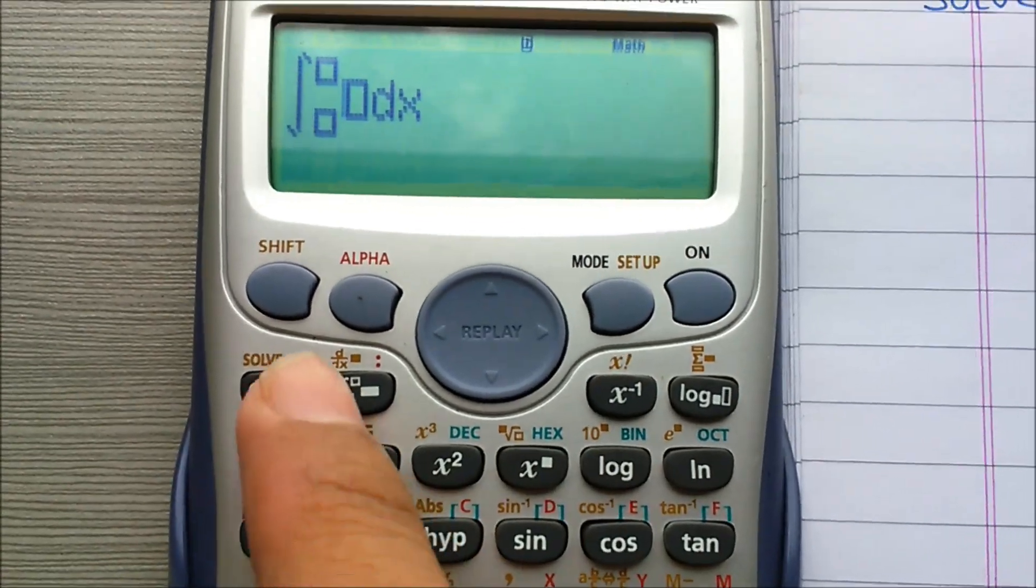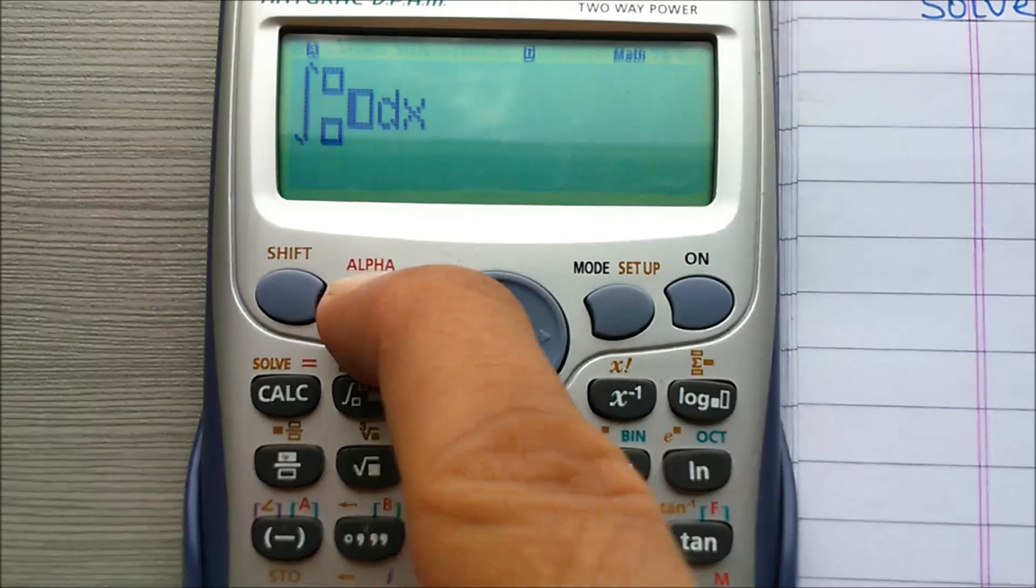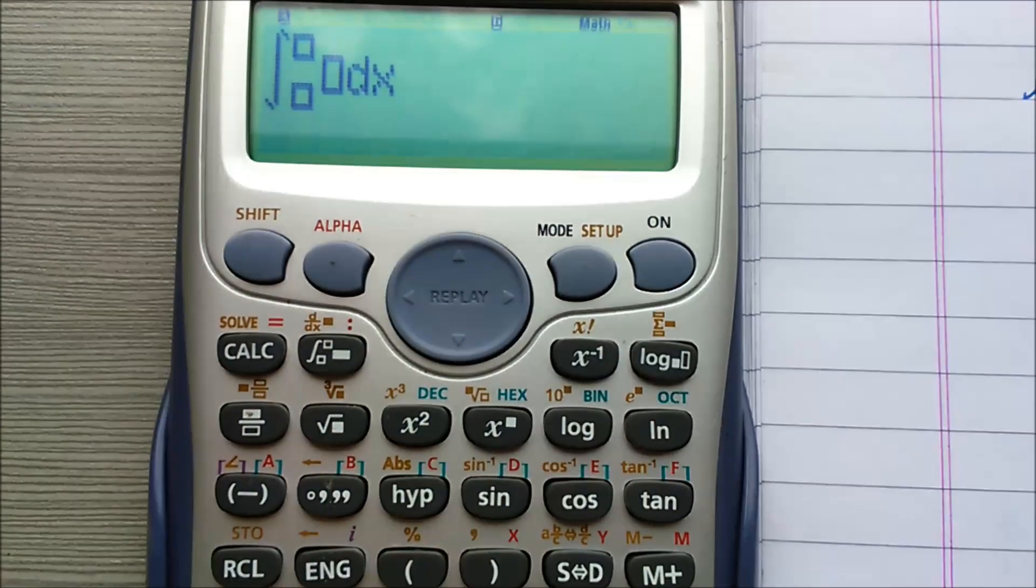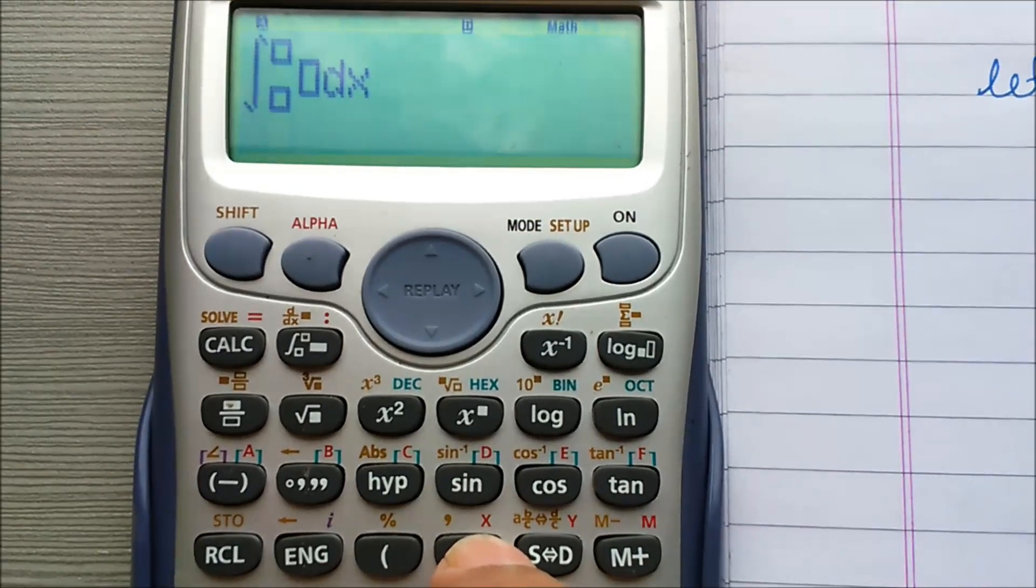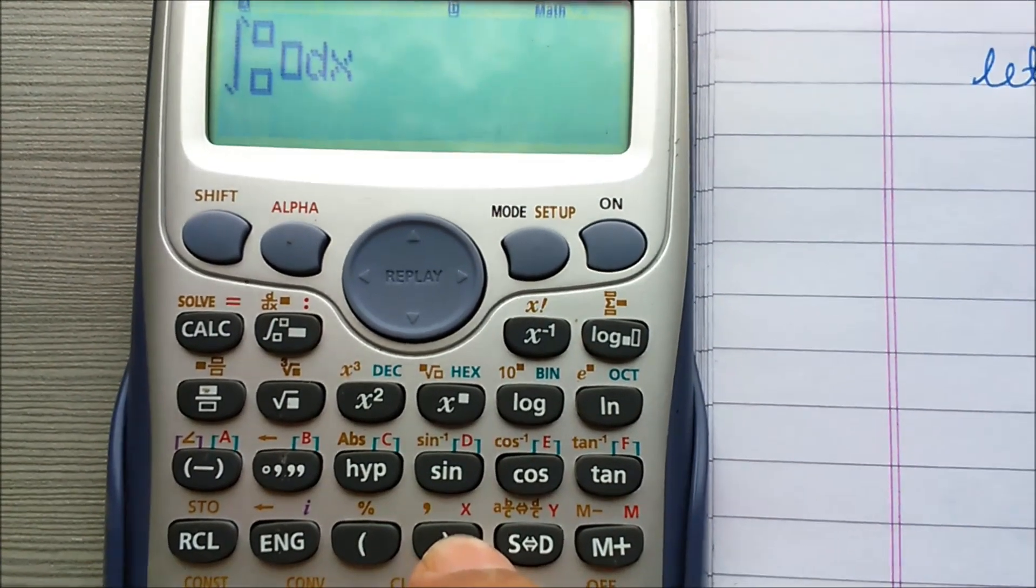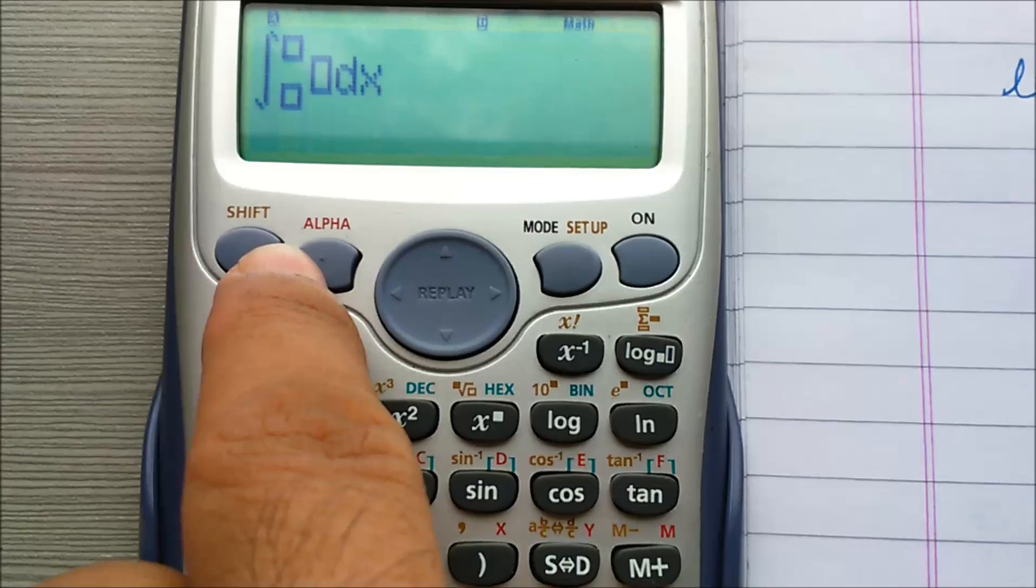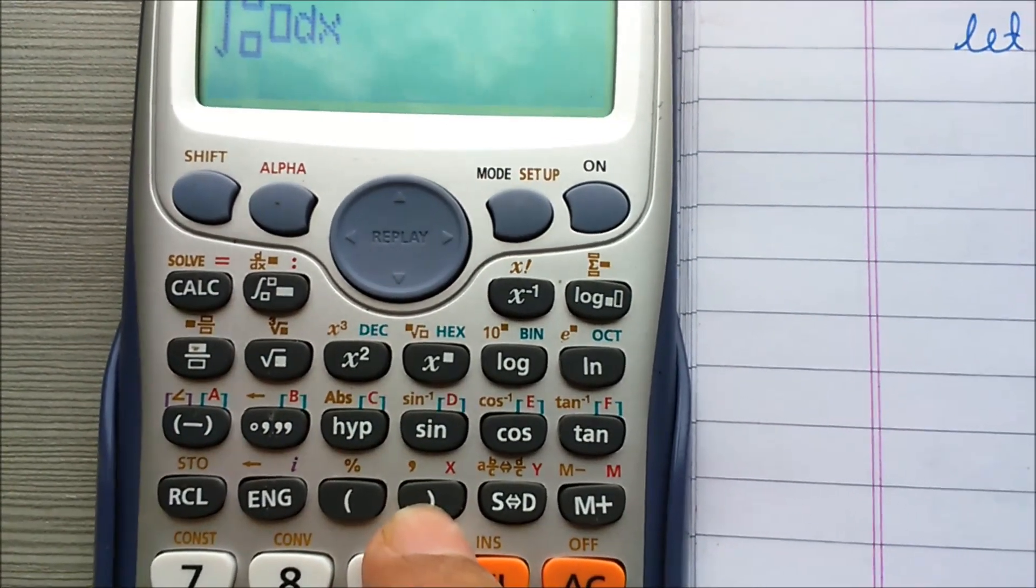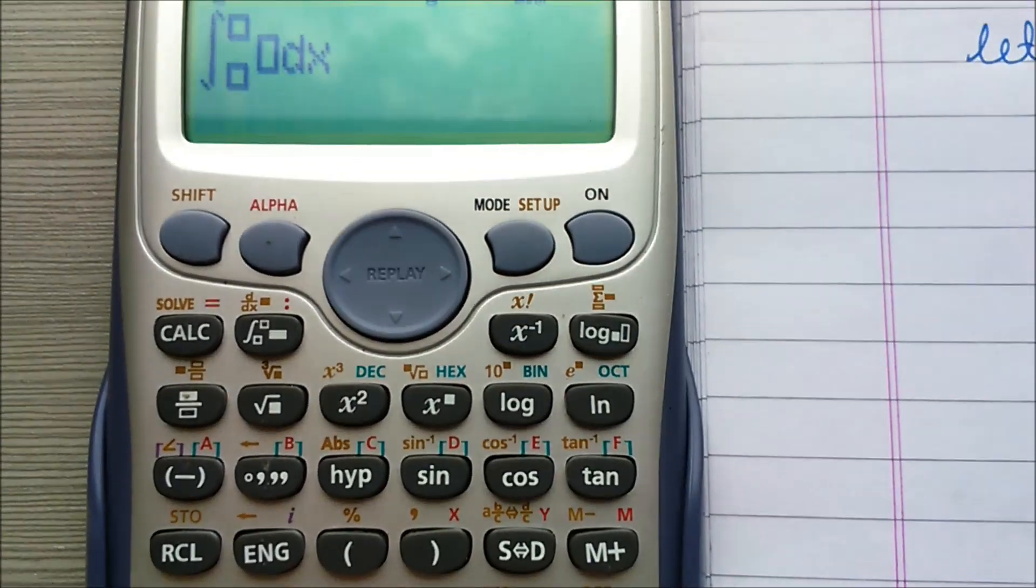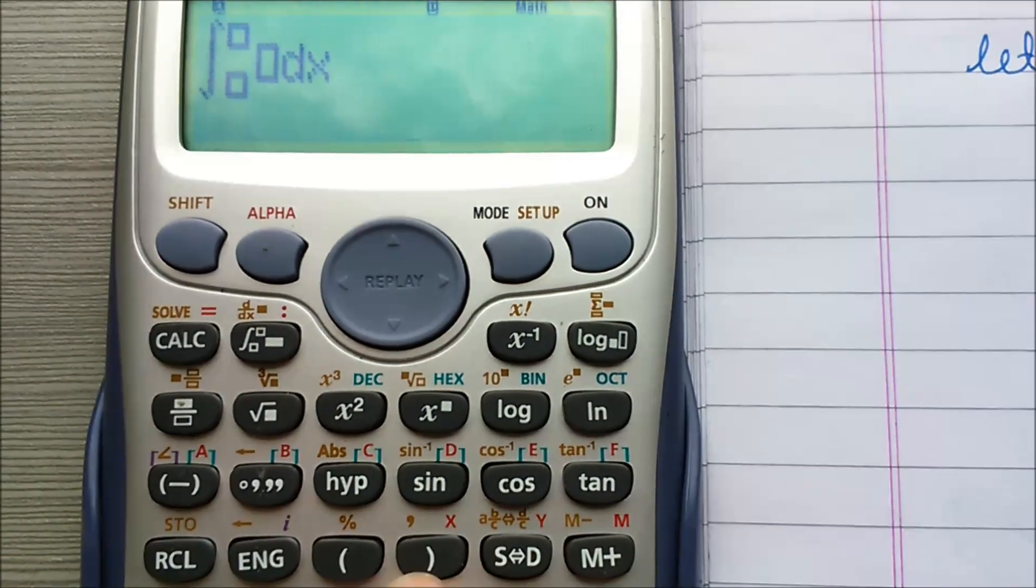For x, first press the alpha button. Now click this button. You see the x symbol in the color of purple. Alpha is also written in purple color, and x is also written in purple color. So press this button.